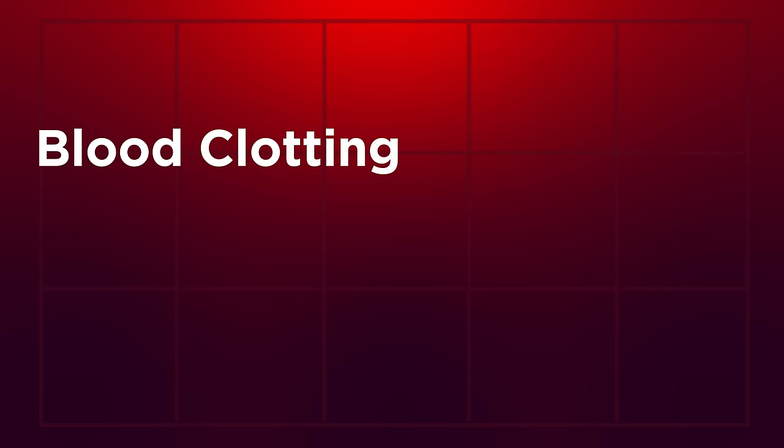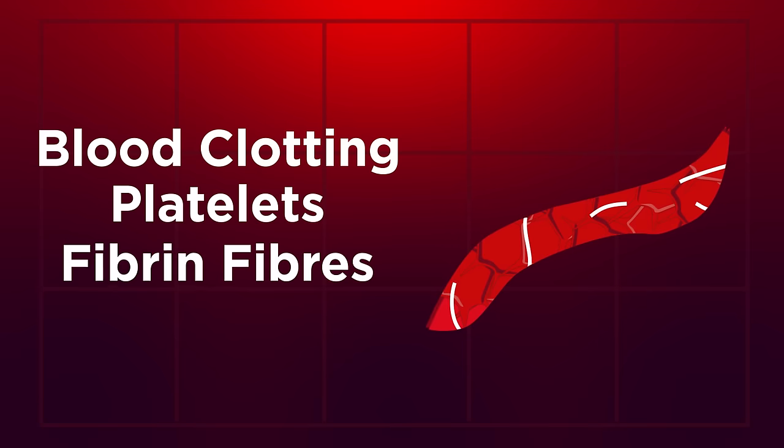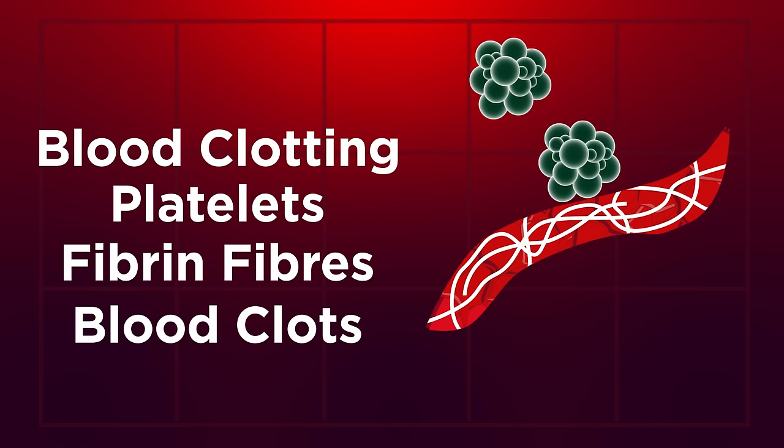So from this video, you should understand the magic of blood clotting. Platelets are first to the scene, closely followed by the fibrin fibers, our blood clots so that we don't lose a lot of blood, and don't let lots of nasty pathogens into our body if we cut ourselves.